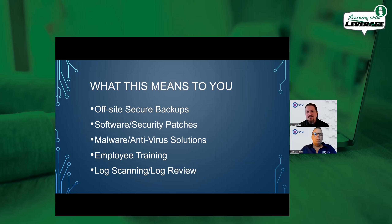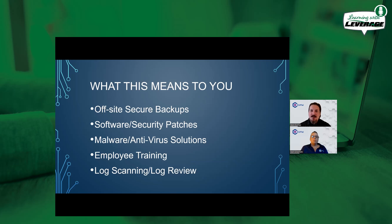Offsite secure backups — when it comes to ransomware or just disaster recovery, it doesn't have to be a cybersecurity attack. It could be a lightning strike, a fire, or a sprinkler head that flooded the server room. Numerous things could happen, and it's always best practice to have a secure offsite backup — whether utilizing a cloud service or co-location service — as long as that backup is encrypted and you have the ability to recover and restore quickly. That could be the difference in whether you pay the ransom or you recover in less than 72 hours.